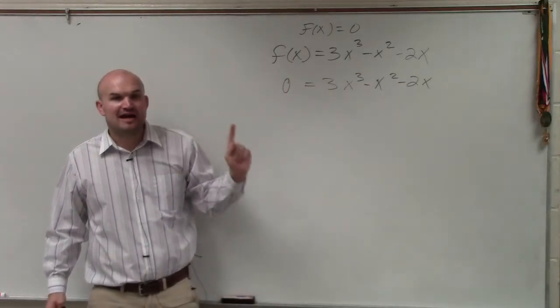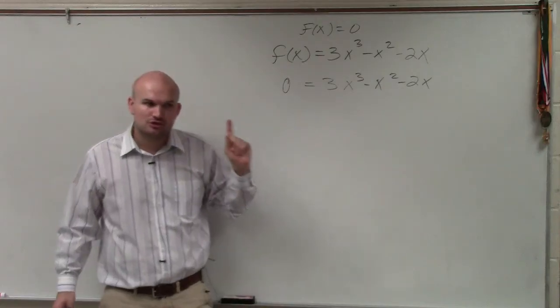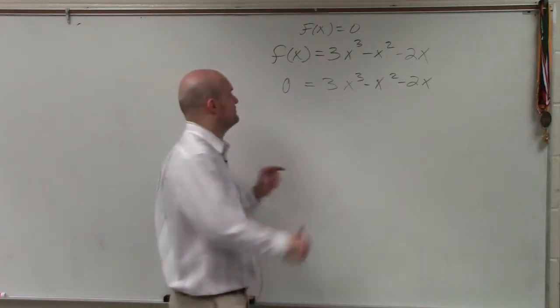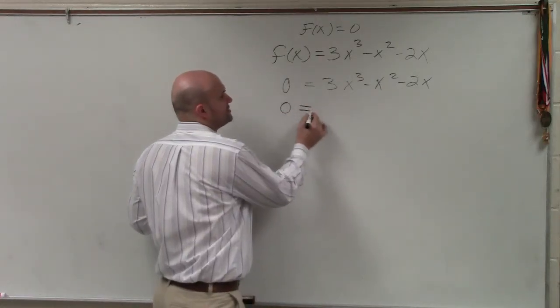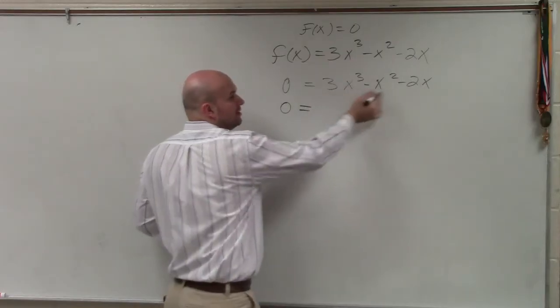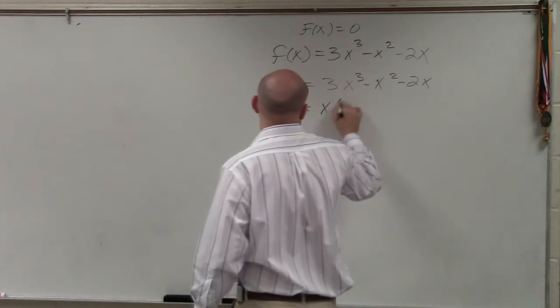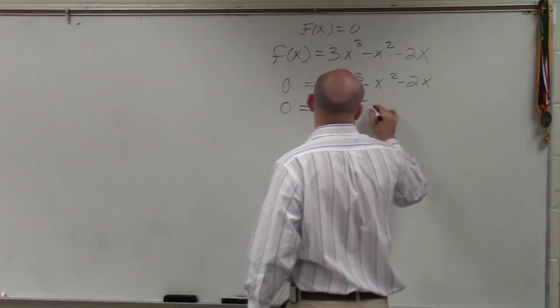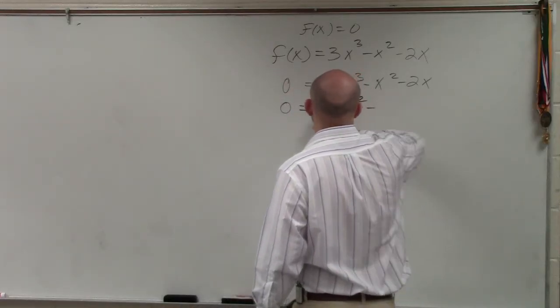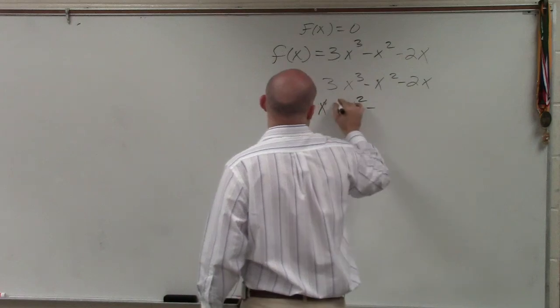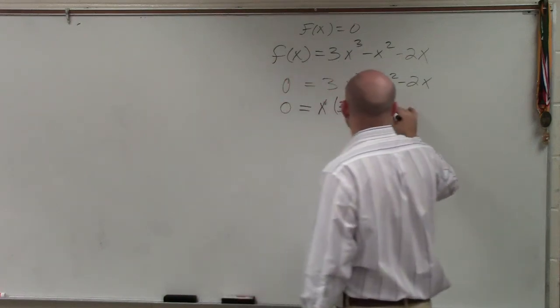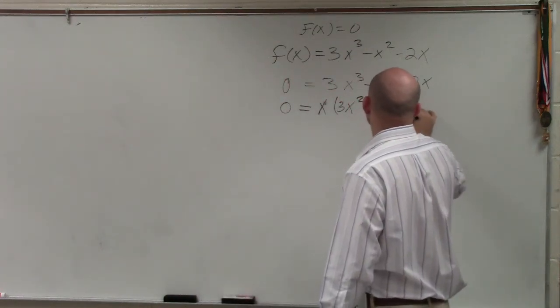The first step always in factoring is factoring out your GCF. So what common term do they all share? Unfortunately, they don't share a number in common, but they do share an x. That's a 3. 3x squared minus x minus 2.